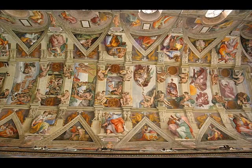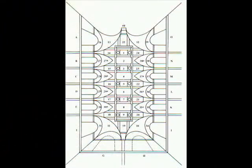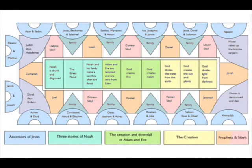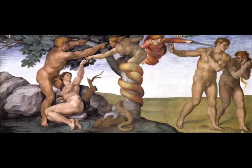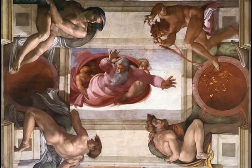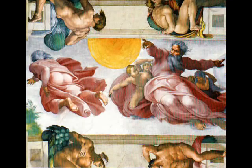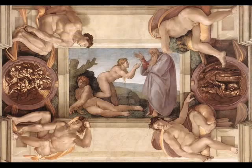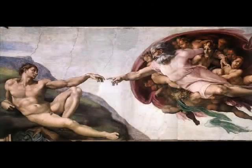The ceiling is laid out into five main sections: the central narratives or stories, the pendentives, the prophets and sibyls, the medallions, and the ancestors of Christ. The central narratives run through the center of the ceiling and show nine stories from Genesis: the separation of light from dark, the creation of the sun, moon, and the planets, the creation of Adam, the creation of Eve, original sin and the banishment from the garden of Eden, the sacrifice of Noah, the flood, and the drunkenness of Noah.